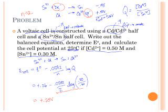So if Q is larger than one, E-cell will be less than E-naught, and vice versa. If your Q is less than one, the E-cell would be greater than E-naught. So that's a handy thing to remember.